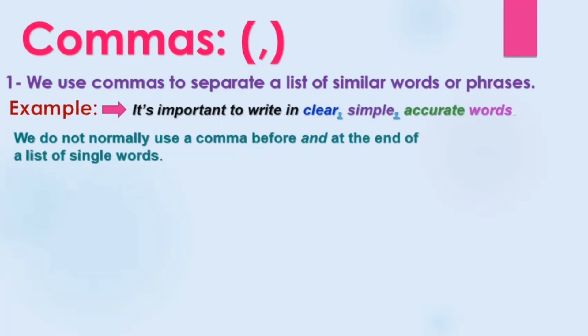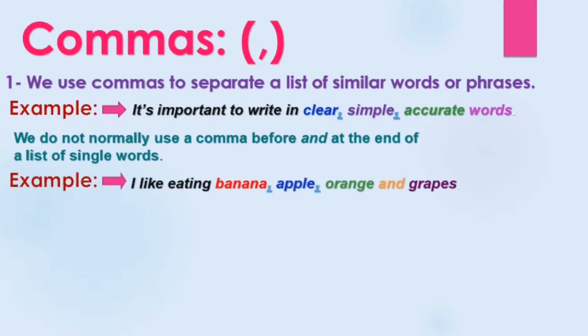We don't normally use a comma before 'and' at the end of a list of single words — عادةً لا نستخدم الفاصلة قبل كلمة and. For example: 'I like eating banana, apple, orange and grapes.' So we separate the nouns with commas but we don't add a comma before 'and.' However, in American English they do use a comma before 'and,' while in British English they don't.